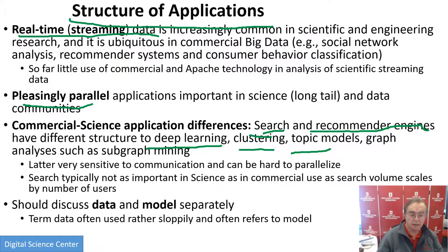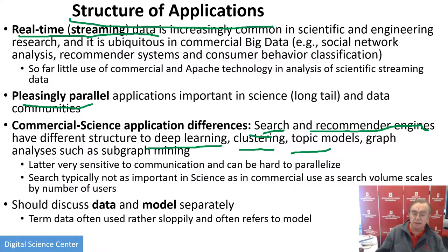The difference is seen in terms of the hardware needs: search and recommender engines, especially search, and pleasingly parallel jobs do not need lots of communication. Whereas things like subgraph mining are very, very communication sensitive — pretty hard to get an efficient algorithm.